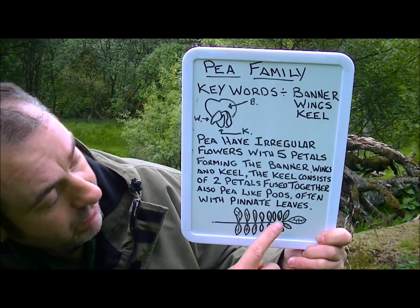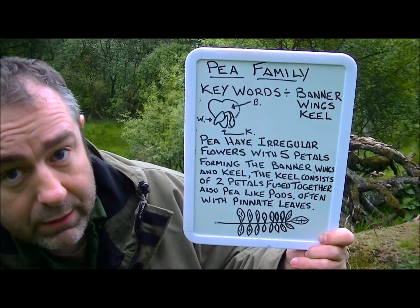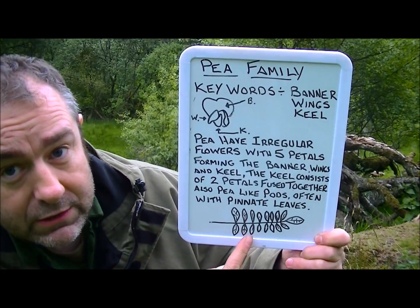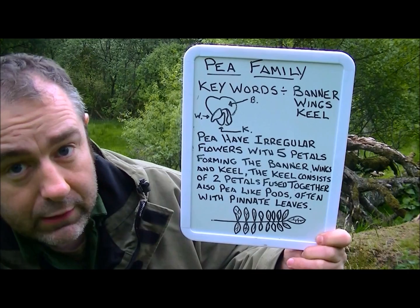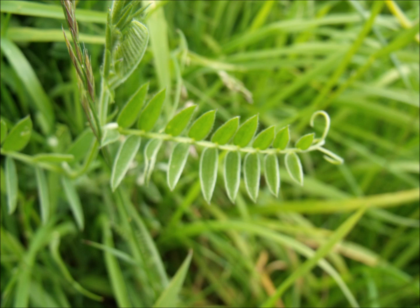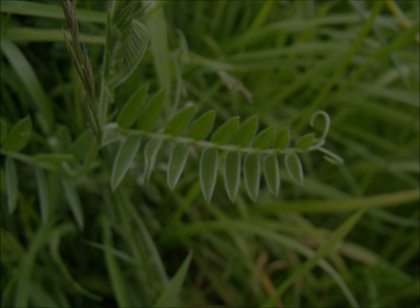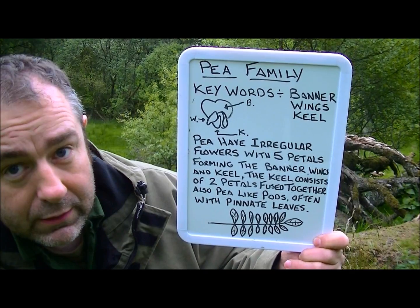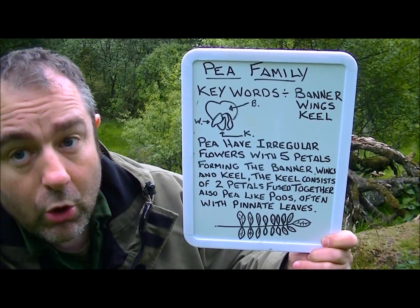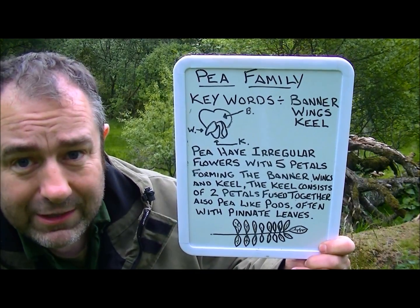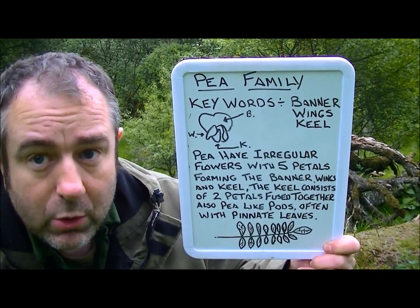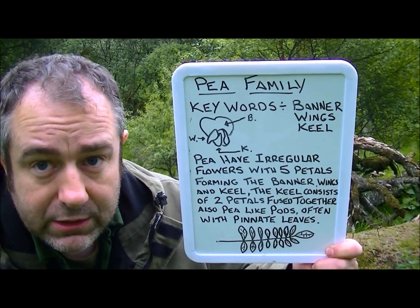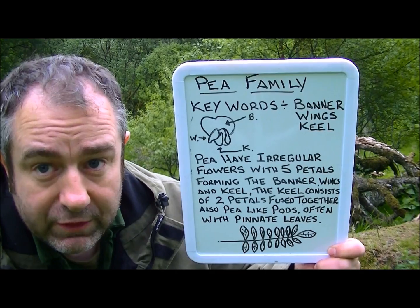Also, the pea family have pods — like pea pods, obviously. The plants are often with pinnate leaves. Pinnate leaves are like they're drawn below — they're opposite each other in this arrangement. So all you really need to remember is the keywords: banner, wings, and a keel, when you see the flowers.